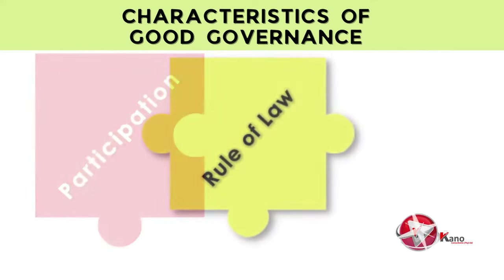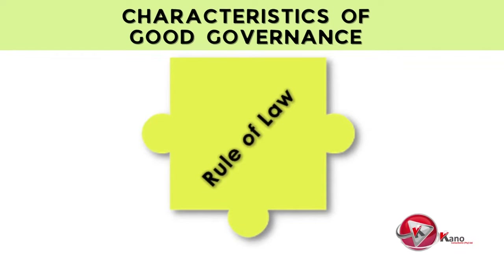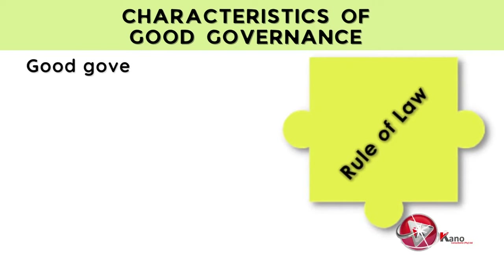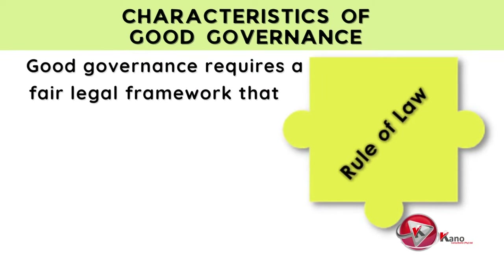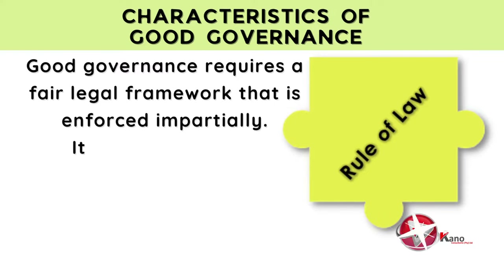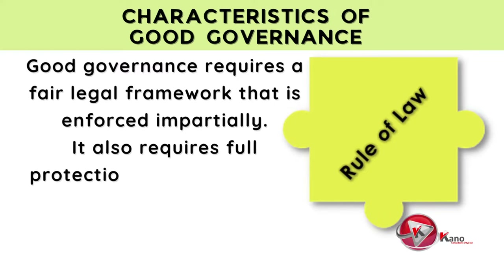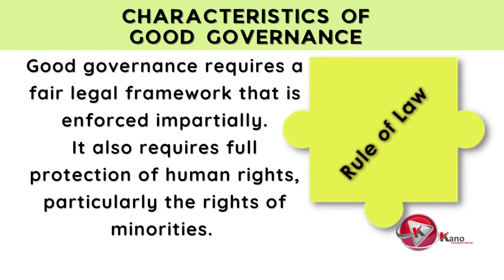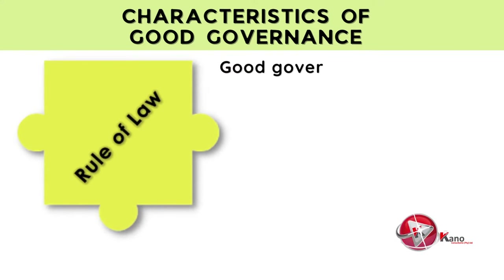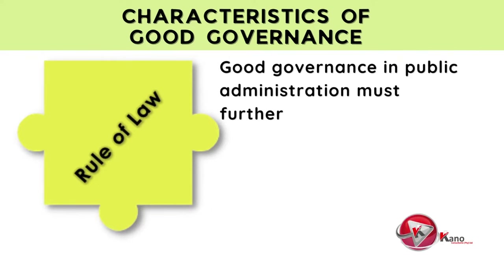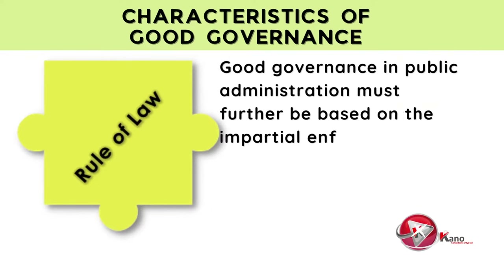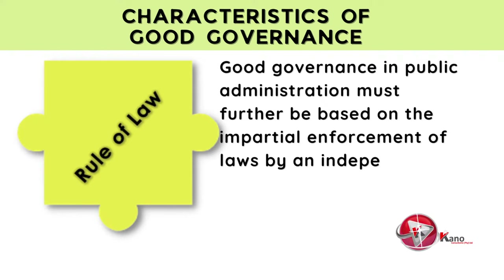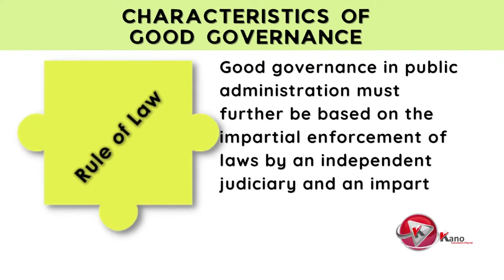The next characteristic is that public administration must be based on the rule of law. Good governance requires a fair legal framework that is enforced impartially. It also requires full protection of human rights, particularly the rights of minorities. Good governance in public administration must further be based on the impartial enforcement of laws by an independent judiciary, as well as an impartial and incorruptible police force.